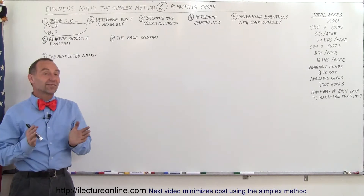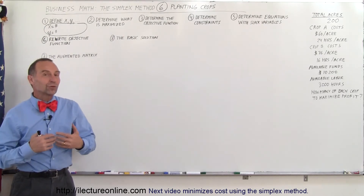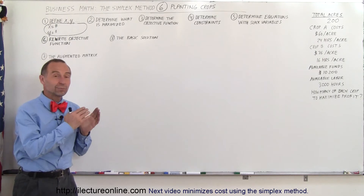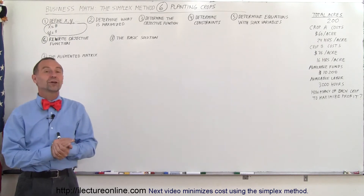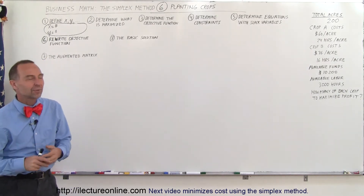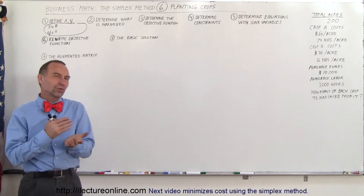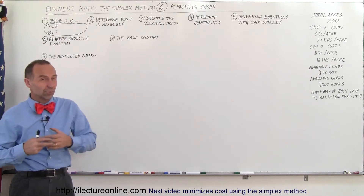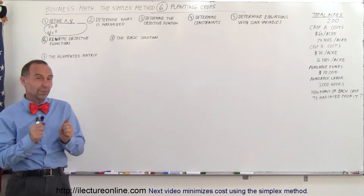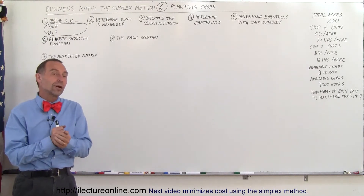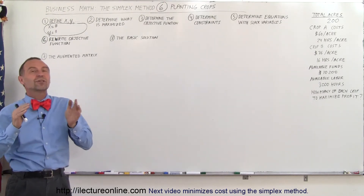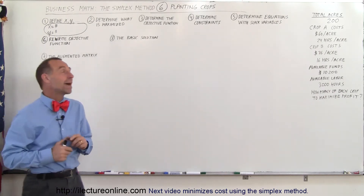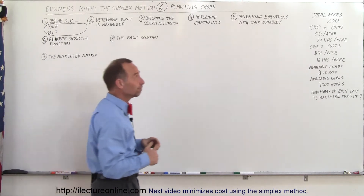Welcome to Electronline. In this example, we're going to use the simplex method to solve a problem for farmers. We're going to plant two different crops. It costs a certain amount of money to plant each crop, a certain amount of labor for each crop, and we get a certain amount of profit for each crop. How much of each crop should we plant and cultivate in order to make maximum profit?